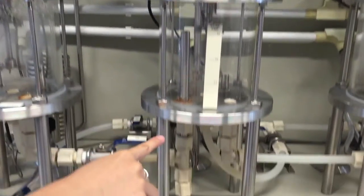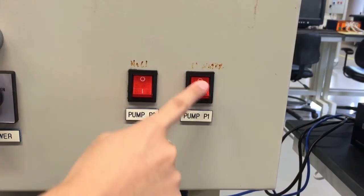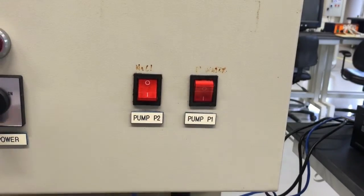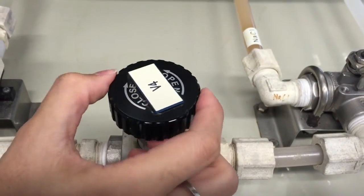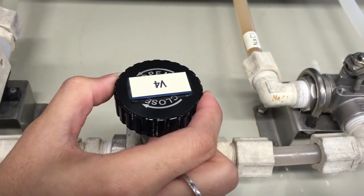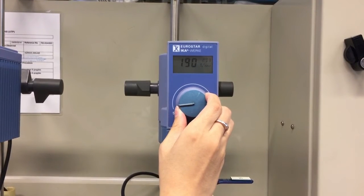Pump P1 will be switched on to fill up the 3 reactors with deionized water and valve V4 is adjusted to obtain a flow rate of 150 ml per minute. Stirrers 1, 2, 3 from respective reactors is switched on and are set to approximately 200 rotations per minute.